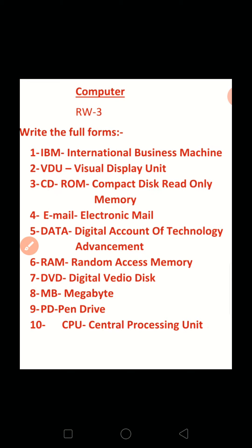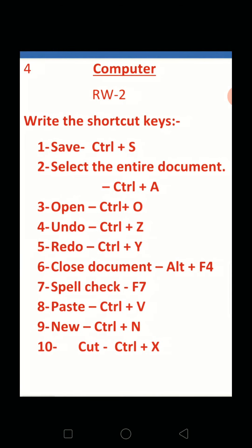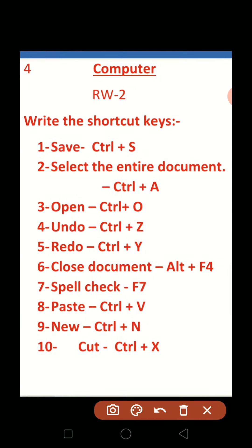Ok kids, move on to the next page for revision work 3. This is revision work 3 — write the shortcut keys. Ok kids, you have to write the shortcut keys. First: Save — the shortcut key is Ctrl+S. Select the entire document — Ctrl+A.